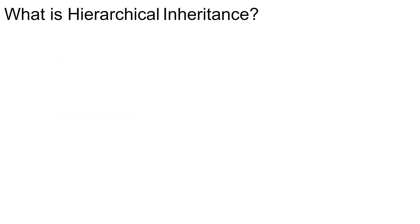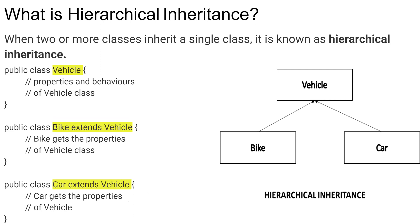Hierarchical inheritance is when two or more classes inherit from a single class. Looking at the diagram, we have a Vehicle class, and Bike and Car are two classes which inherit from Vehicle. Bike is a specific type of vehicle and Car is also a specific type of vehicle. In the code, class Bike extends Vehicle and class Car extends Vehicle. This is hierarchical inheritance — two or more classes inheriting from a single class.